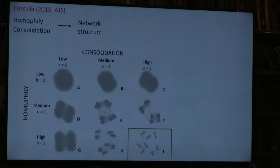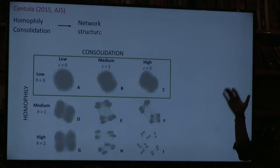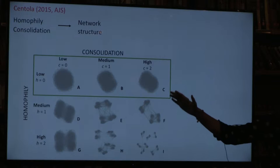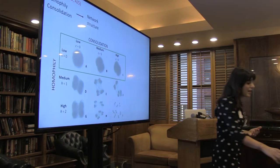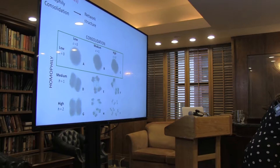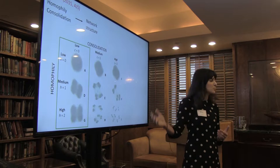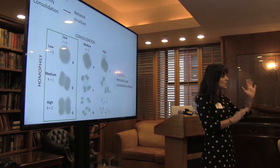But we can see something else from these graphs: the two parameters are not independent in their effects. If we keep homophily low and keep increasing consolidation, that does not really create the same kind of balkanization. Similarly, if we keep consolidation constant and increase homophily, we don't see the same kind of splitting happening. This is the first insight from Santola's study: these two parameters actually interact in their effect on network structure.